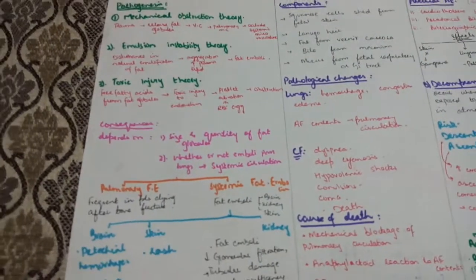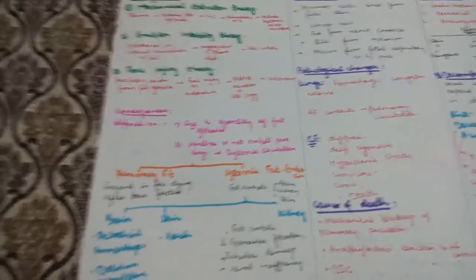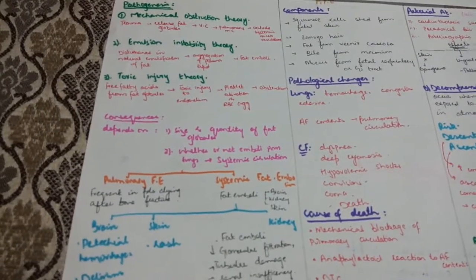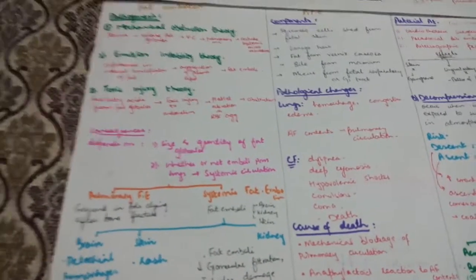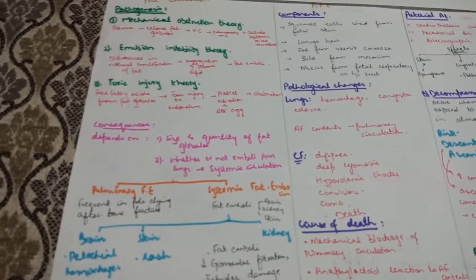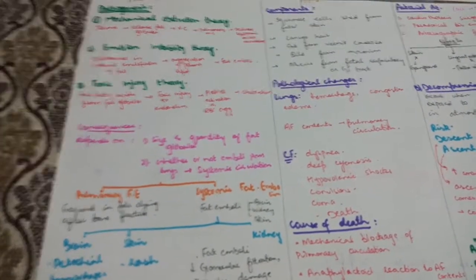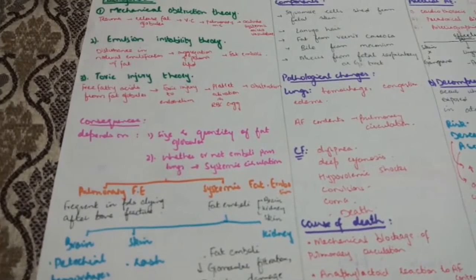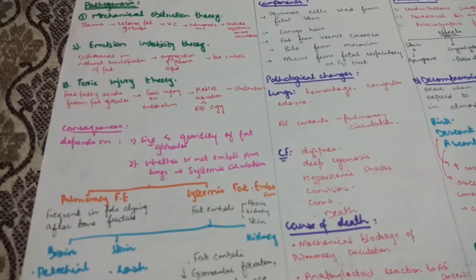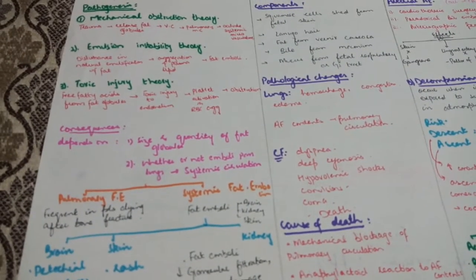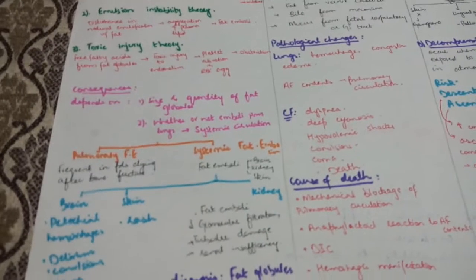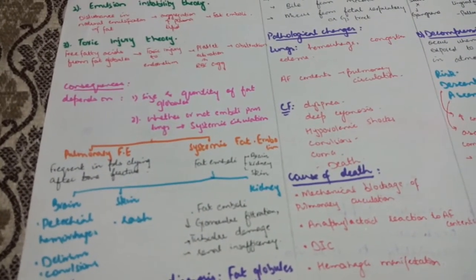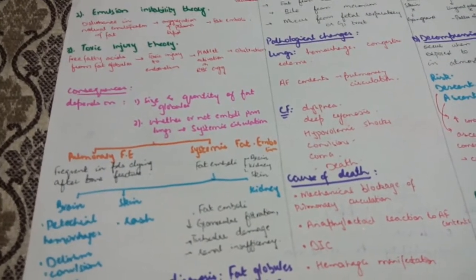Pathogenesis - there are three theories. First is mechanical obstruction theory: when there is trauma, fat globules release and go into venous circulation where they cause occlusion of pulmonary microcirculation and systemic circulation. Second is emulsion instability theory: disturbance in normal emulsification of fat leads to aggregation of plasma lipids and formation of fat emboli. Third is toxic injury theory: free fatty acids from fat globules cause toxic injury to endothelium, platelet activation, and RBC aggregation leading to obstruction.